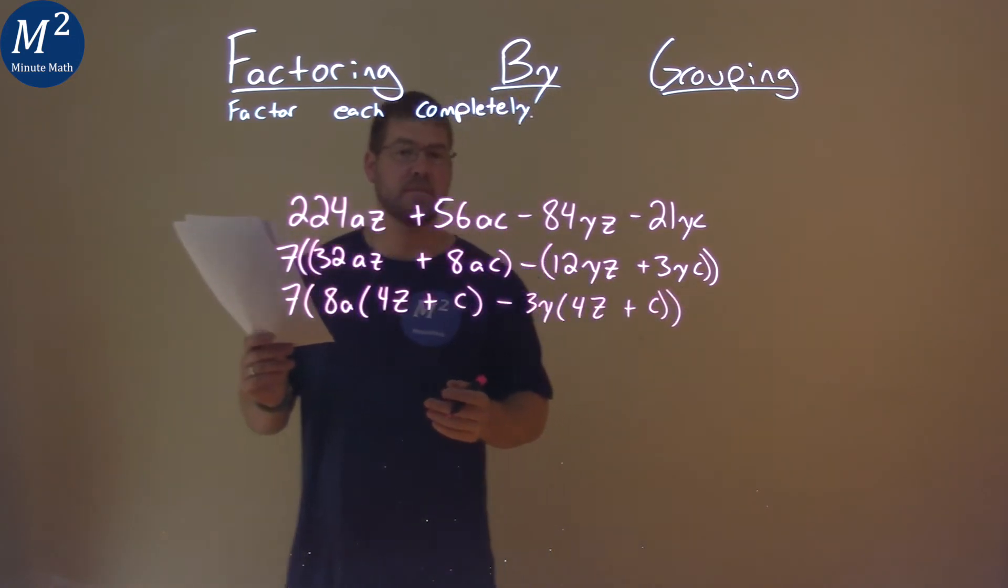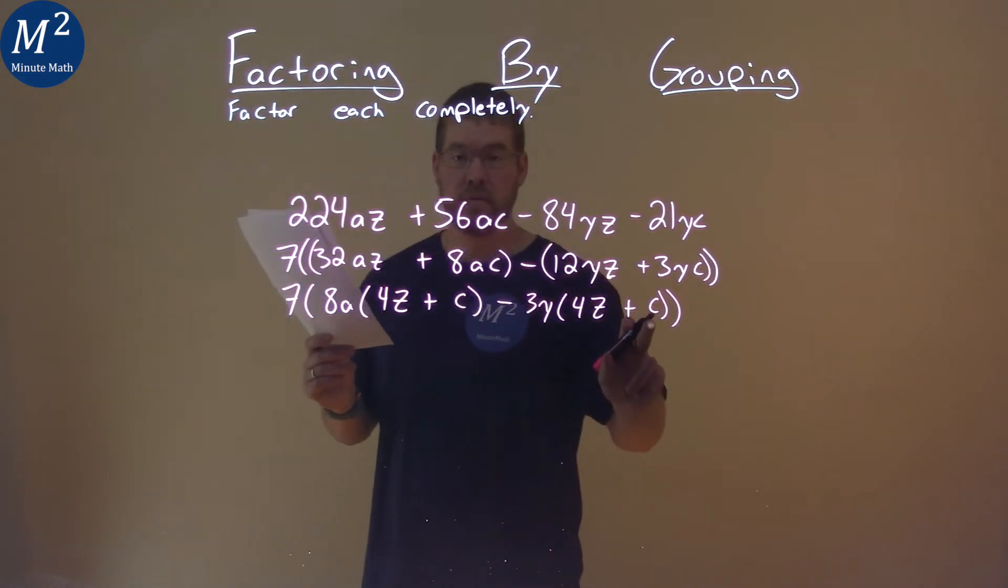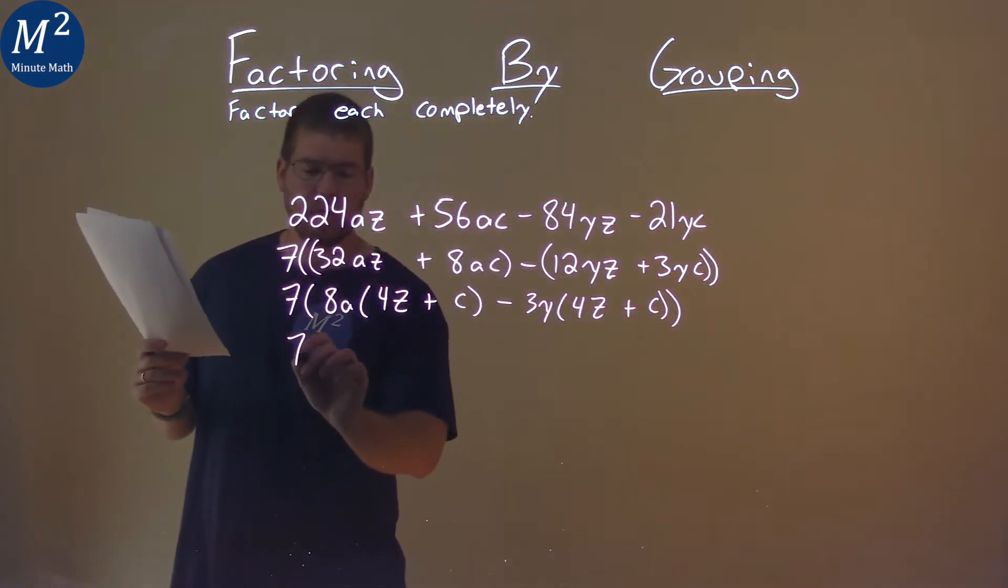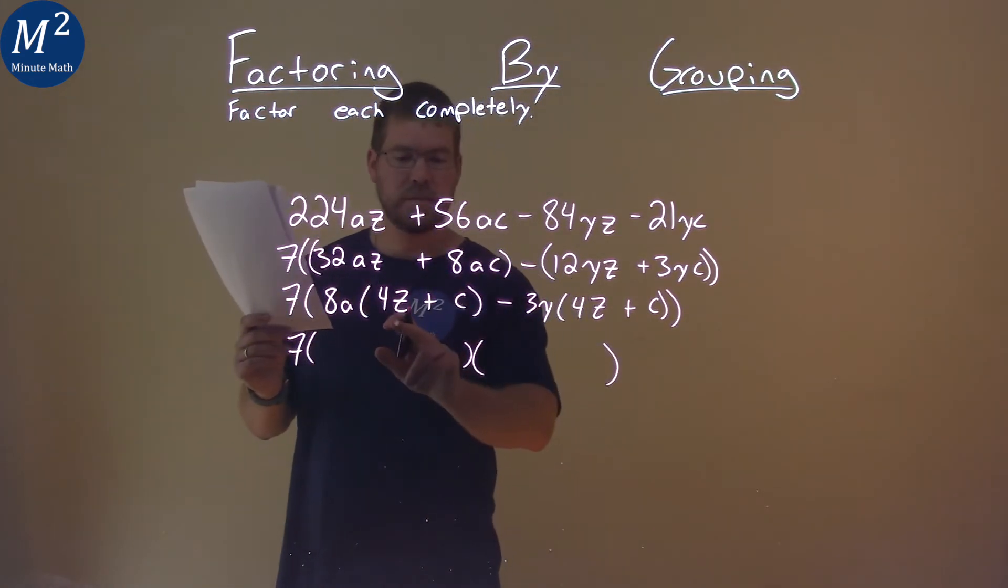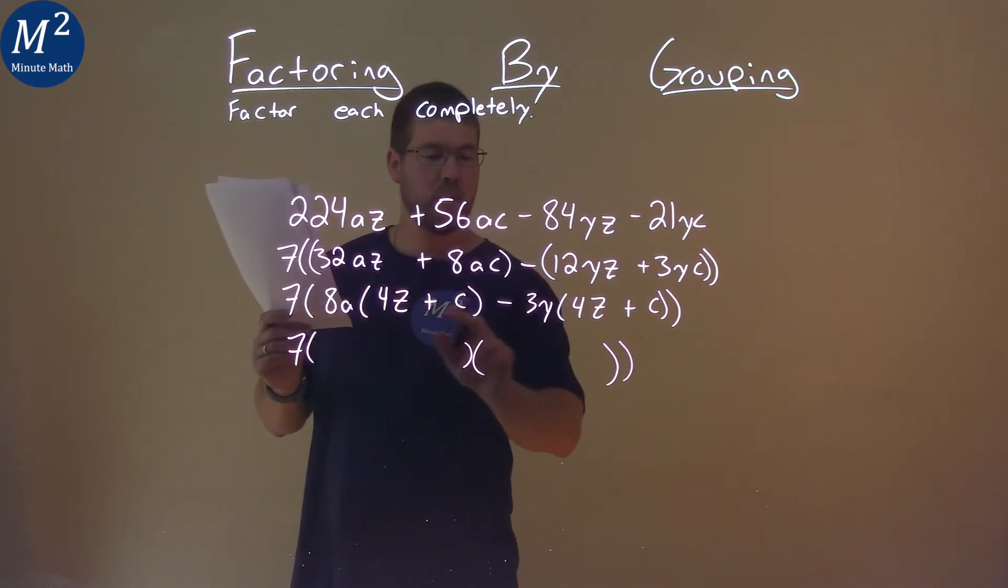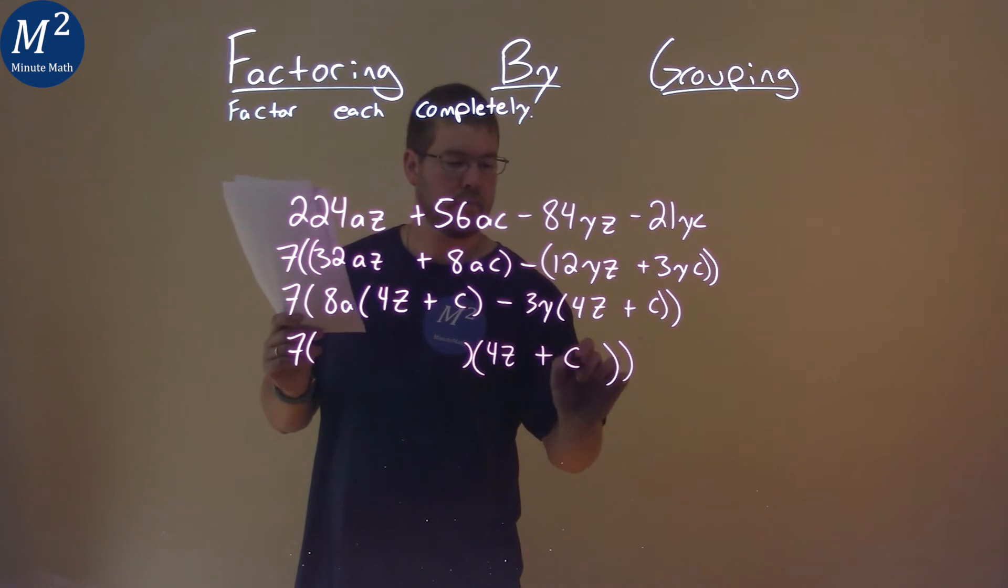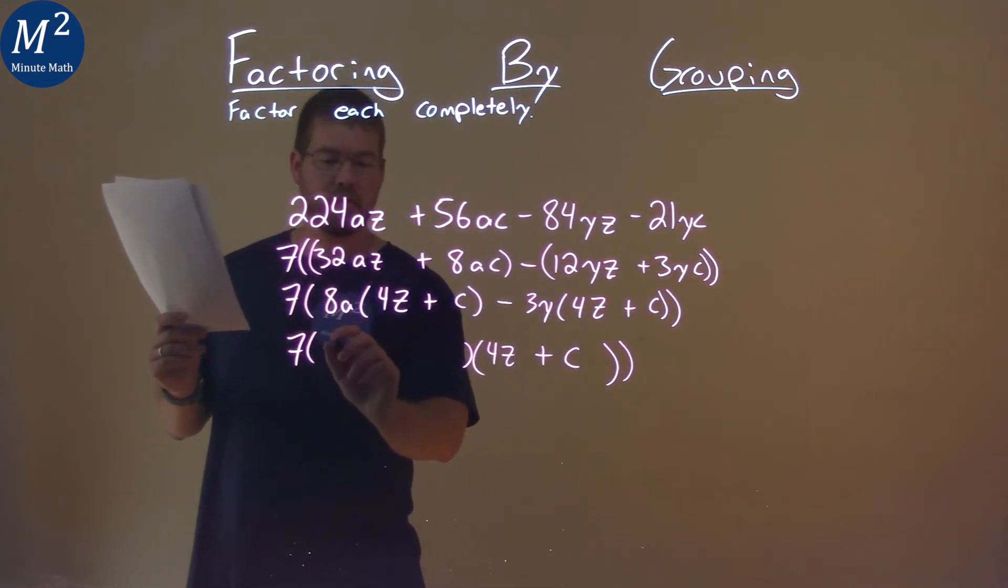So hopefully we can see some repetition here: 4Z plus C and 4Z plus C. So again, I'm kind of going to break this down here. I'm going to pull out a 4Z plus C from both parts of the inner parentheses right here. By pulling that out, we're left with it multiplying the leftovers here: 8A minus 3Y.